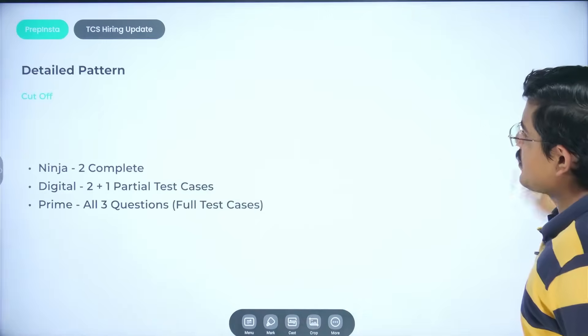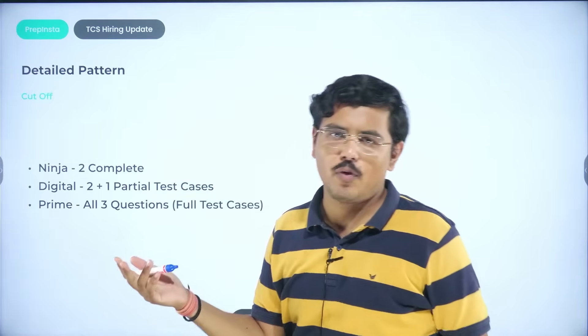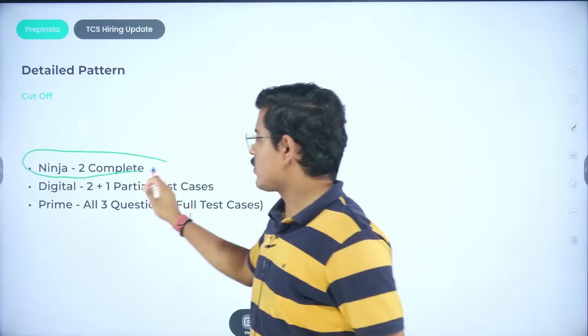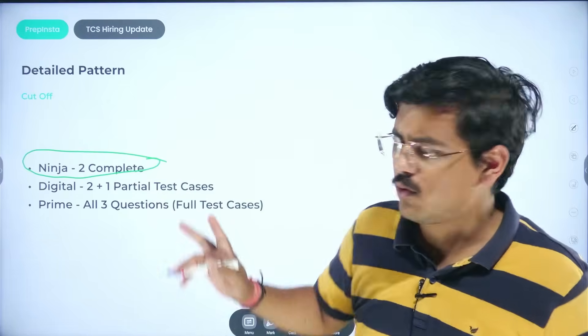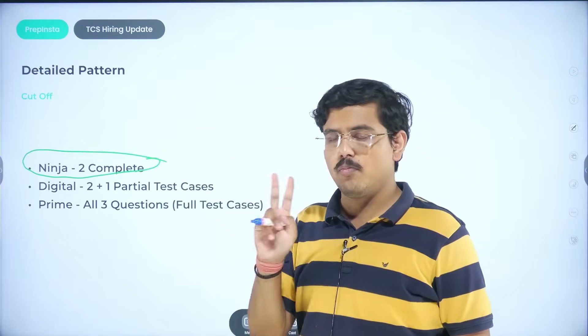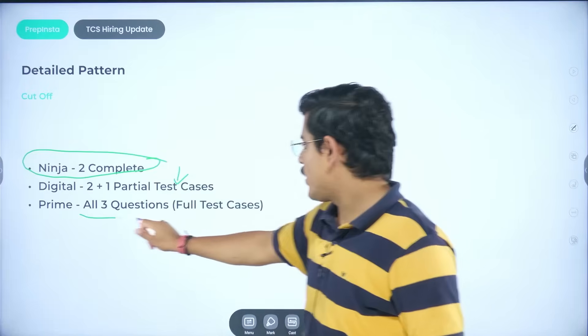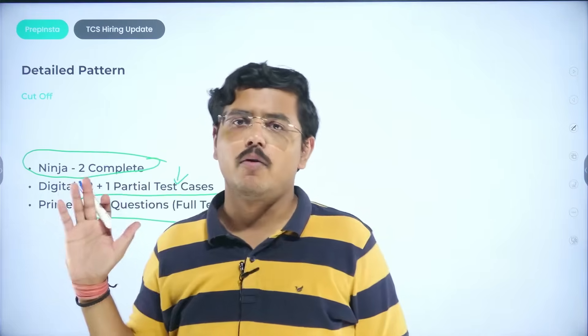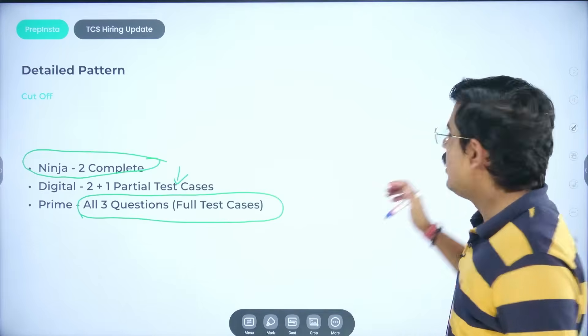If I go further than this, then there's a detailed pattern that I want to explain you basically that is generally followed for profile. So, if Ninja, in Ninja, if you complete two complete coding questions, if you pass on the test cases for two questions, you get a call from Ninja. Generally, even in one question, sometimes you get a call in Ninja. But, in digital, you need to pass at least two questions properly with all test cases and one with partial test cases. Anybody who passes all three questions with full test cases and performs great in aptitude would be called for prime. It is simple meritocracy. You need to practice a lot.